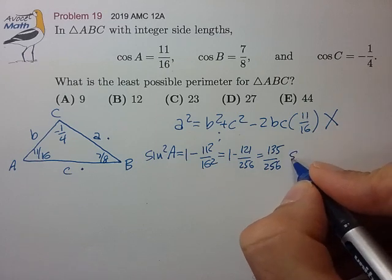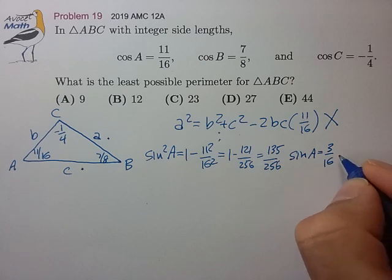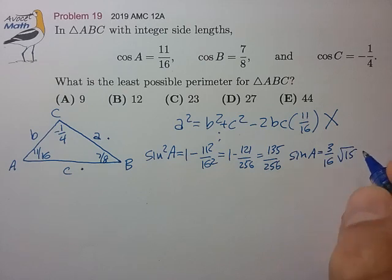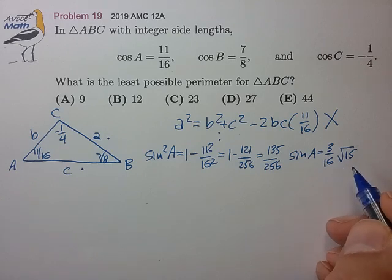And that tells us that the sine of A is 3/16 root 15. Okay, the root 15 is a little bit troublesome, but let's not panic. Let's do one more.